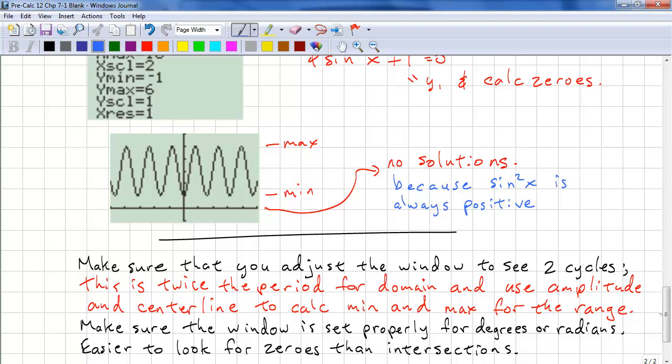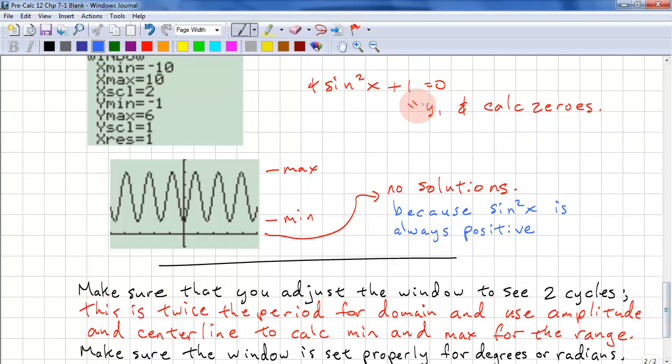The key for this section is to make sure you adjust the window to see at least one cycle, preferably two cycles. This is twice the period for the domain and the amplitude, and the center line should be calculated to get your range. Make sure you're in the proper setting for degrees or radians or you're going to get the incorrect answer. If you're in degrees, you need a large domain in order to see your cycles. You can use intersections to calculate your solutions, but I think it's easier to find zeros.